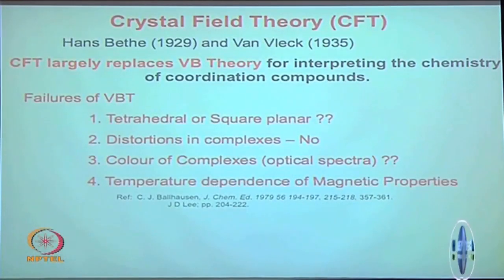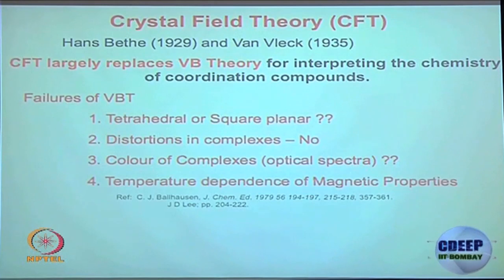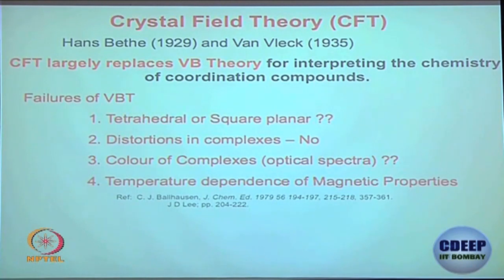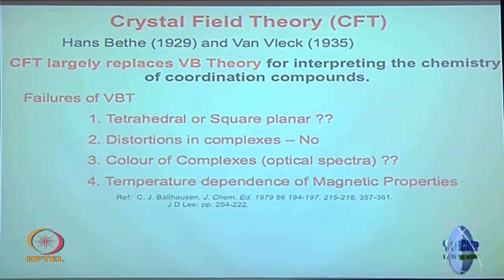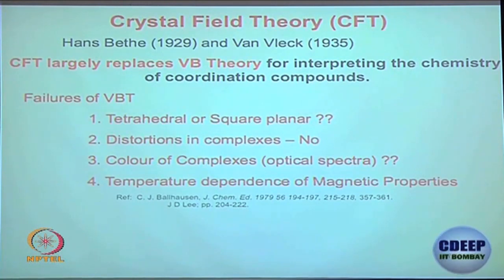There is a lot of information you cannot get from valence bond theory - like why a specific compound is colored, or what happens to their magnetic properties - because these are the things we are really interested in. This is where crystal field theory comes in. It is based on the failure of valence bond theory, as you read in books, where valence bond theory fails to explain further and crystal field theory picks up.